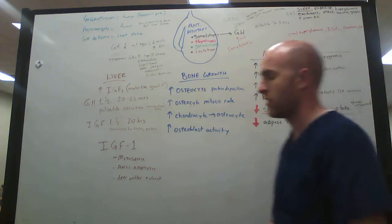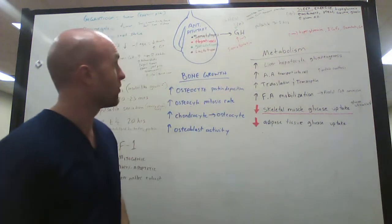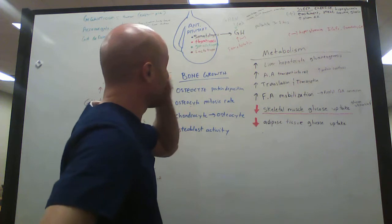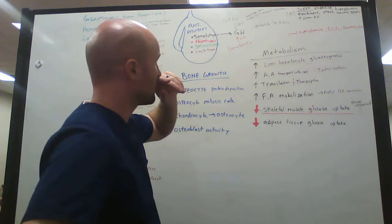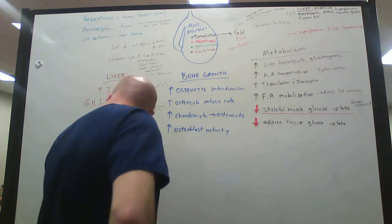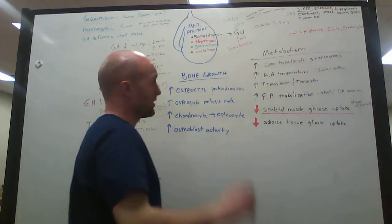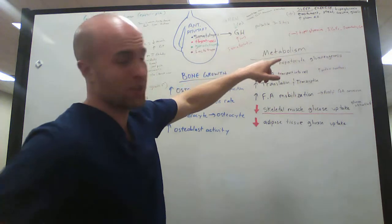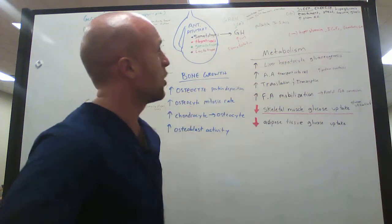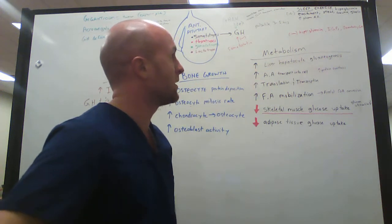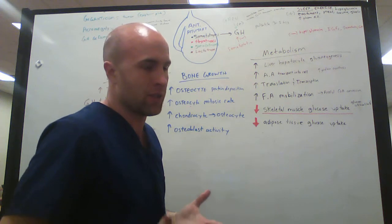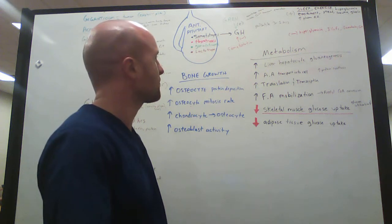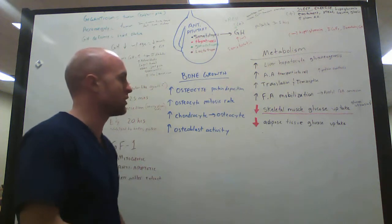Growth hormone-releasing hormone will increase the release of growth hormone, whereas somatostatin will decrease the release of growth hormone. There are other factors that cause more growth hormone release. Sleep—most of the growth hormone is released during sleep. Exercise will also induce some growth hormone, as will hypoglycemia. If you have less sugar in your blood, that's going to trigger more growth hormone to come out.